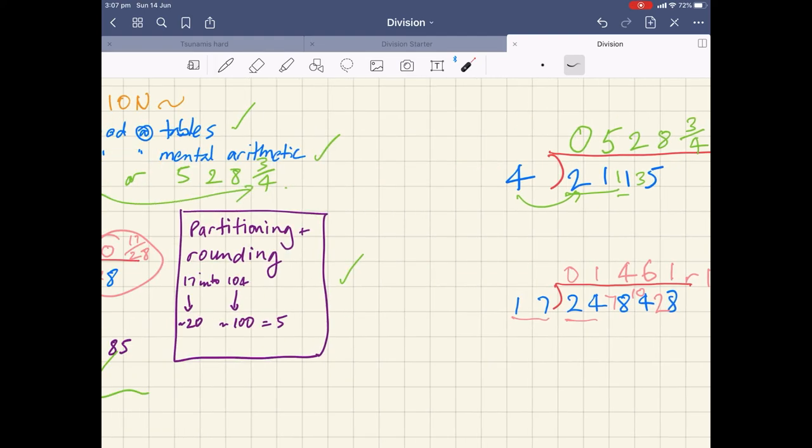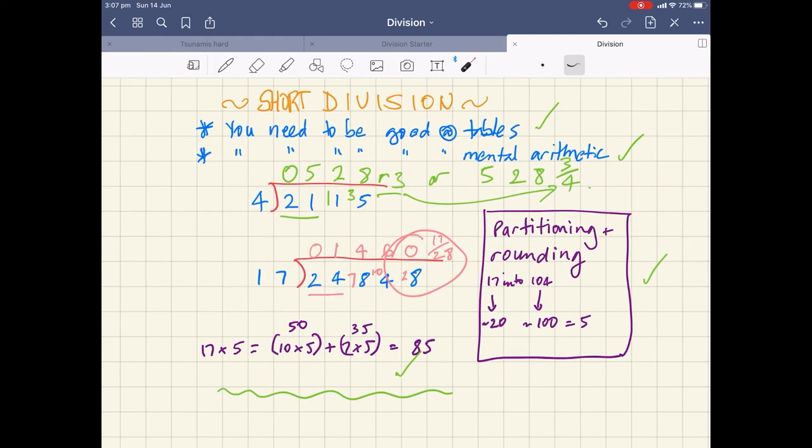So once again, let's think about what we did and what we need to get these correct. We've got to have good tables knowledge. You've got to have good mental arithmetic skills. And you've got to be able to do the partitioning and rounding. And the partitioning and rounding, because you're breaking up those numbers in your head, you can do those calculations in your head very easily.